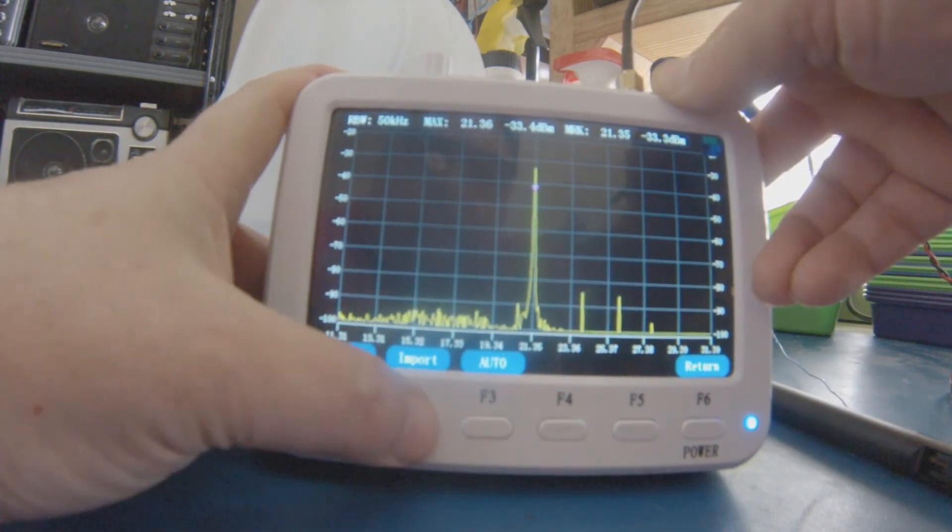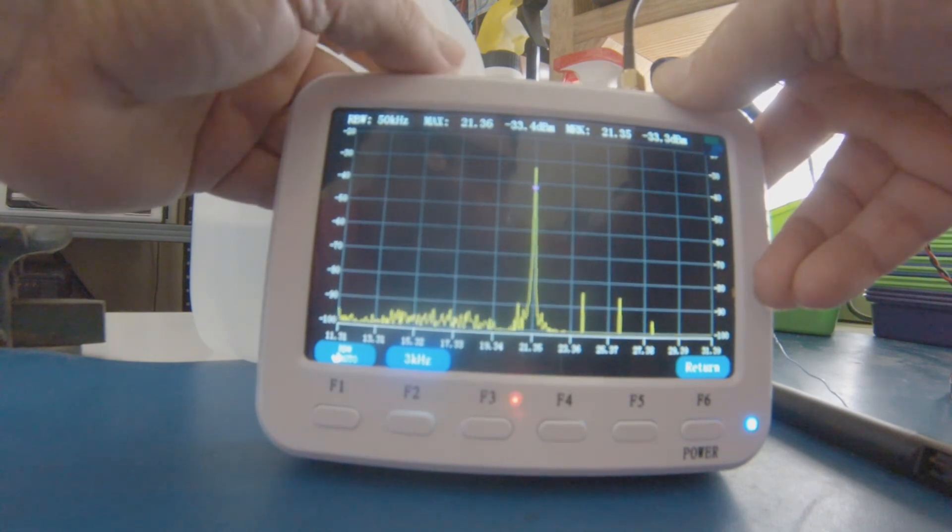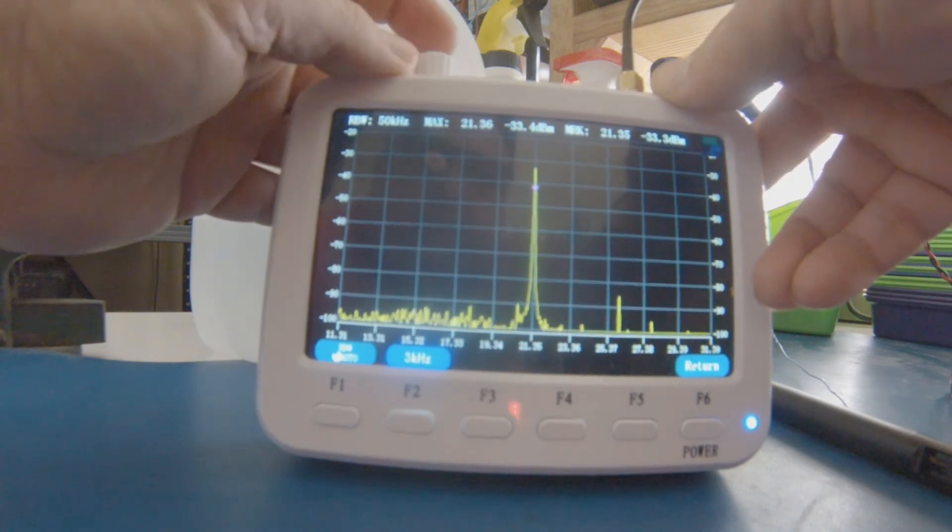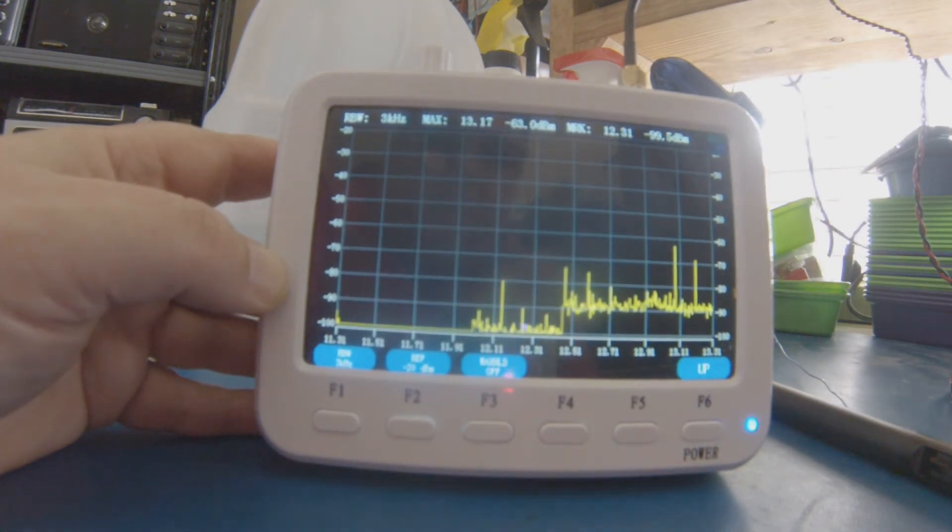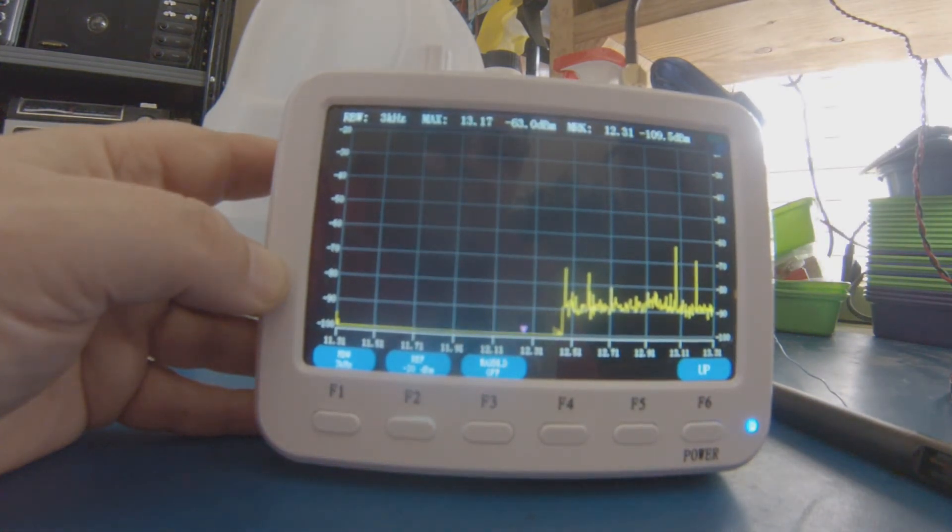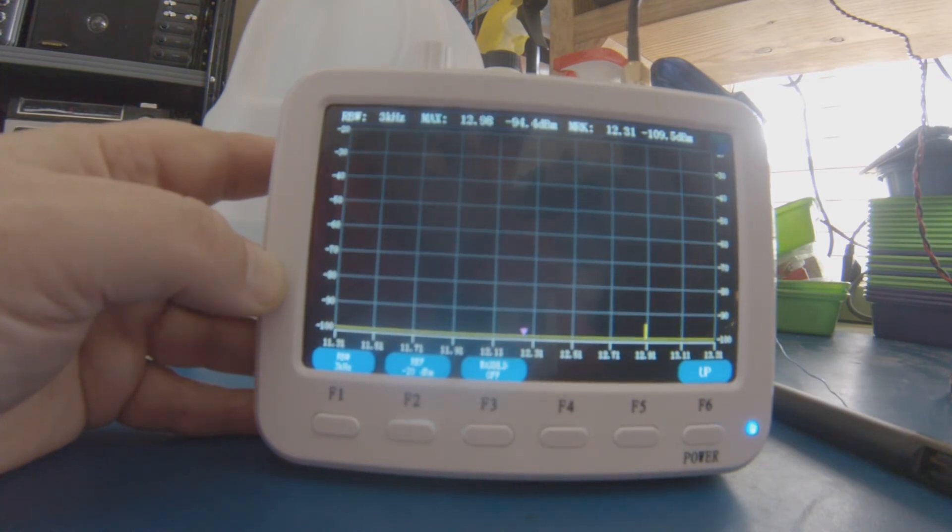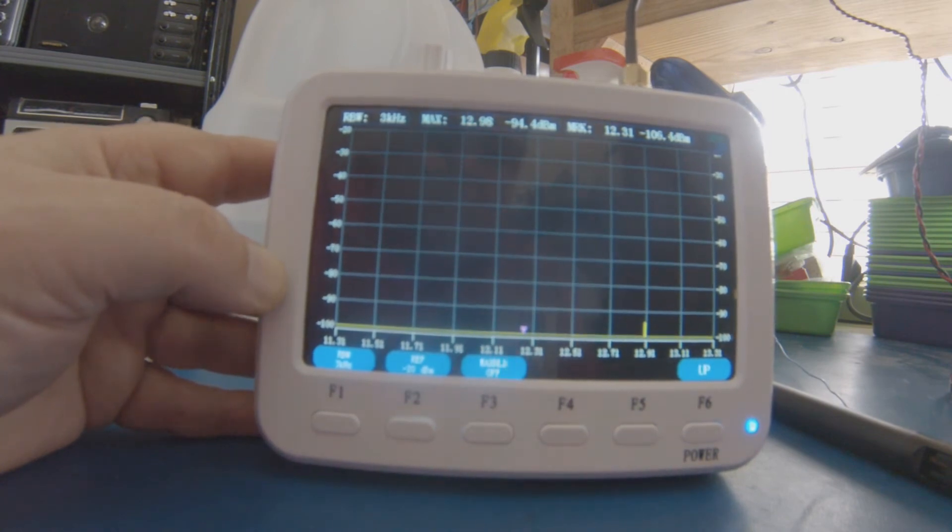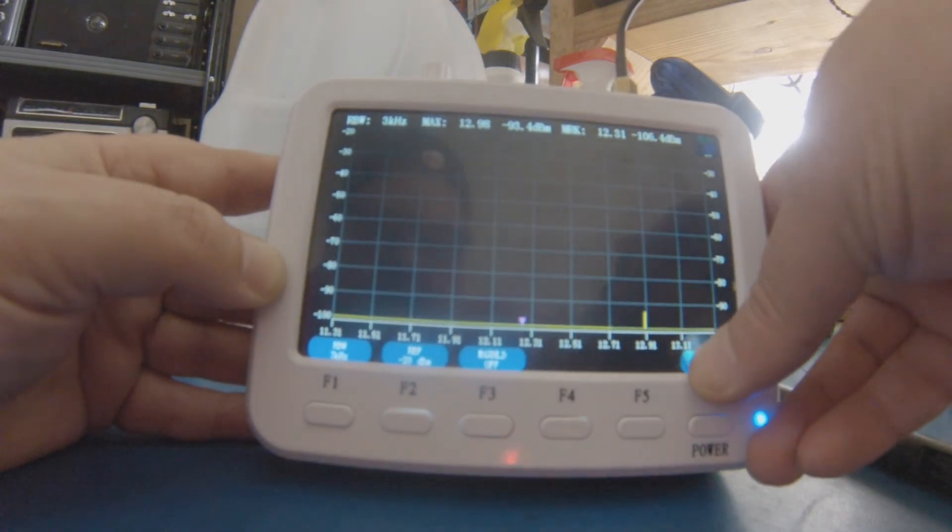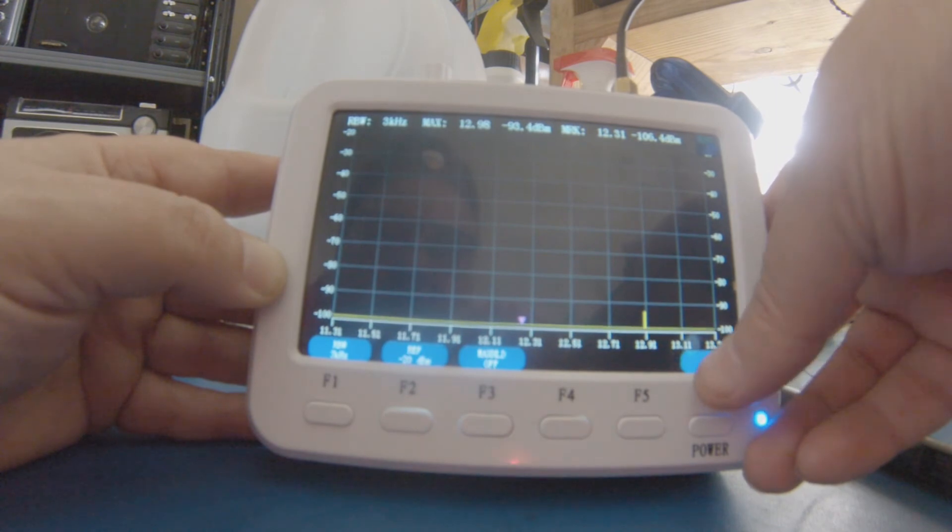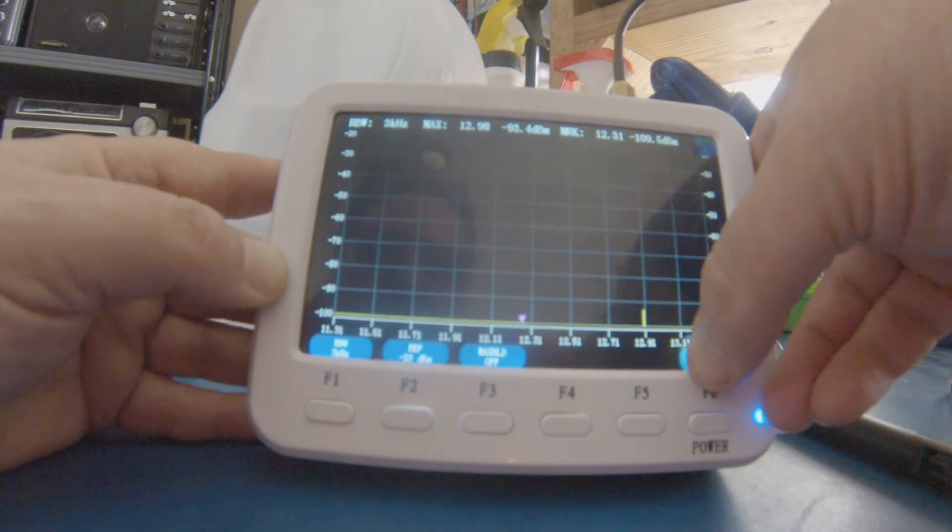I can input, which means I can turn this scroll wheel, or I can go back to auto. Now you can see I've gone to three kilohertz, and that makes it very slow because it's scanning with a resolution bandwidth of three kilohertz. You can also see I've lost the peak, and this is fairly common with spectrum analyzers.